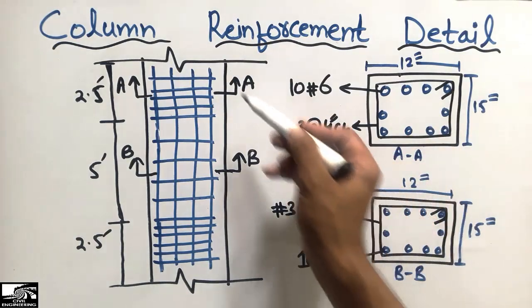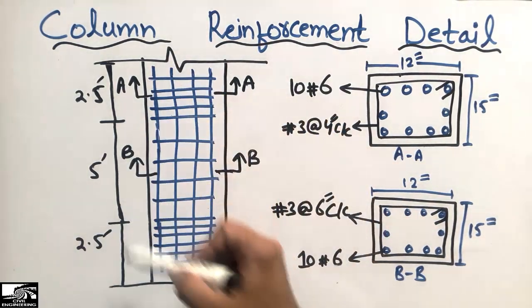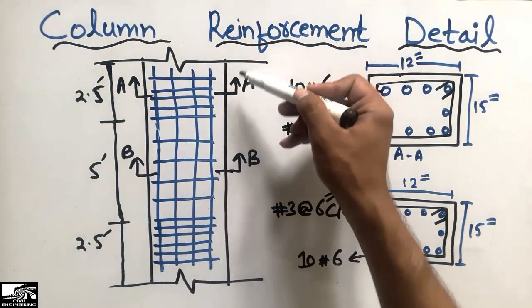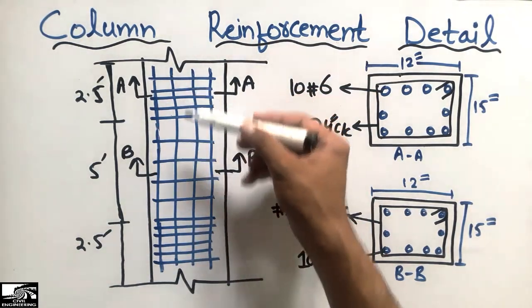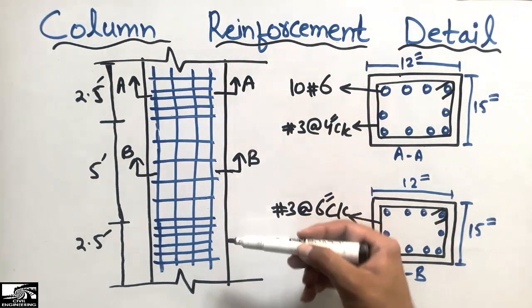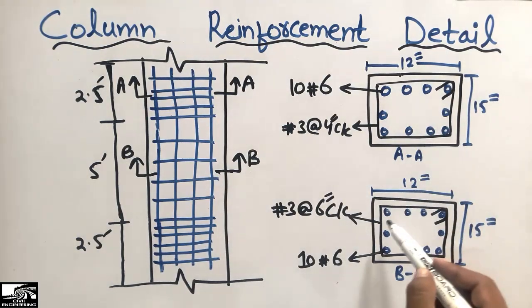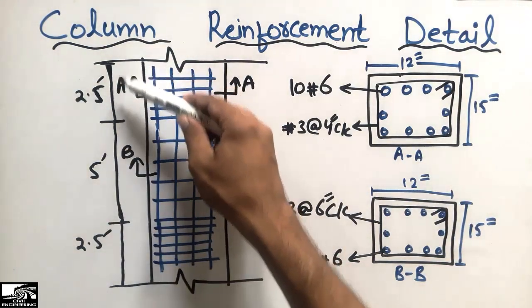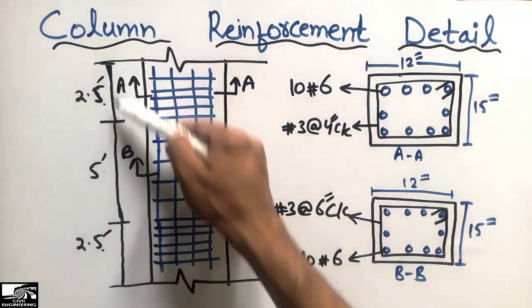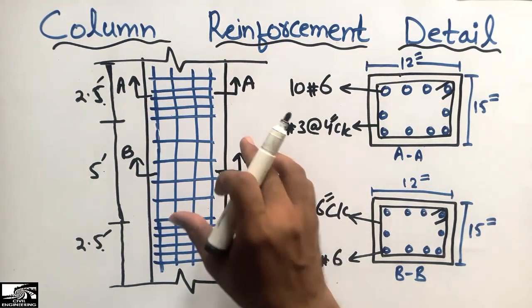This is the column as shown in the figure. This is the elevation section of the column — you can see the elevation here. There are two cross-sections of this column with two different cross-sections. The total length of this column is 2.5 foot + 5 foot + 2.5 foot, so the total length is 10 foot.